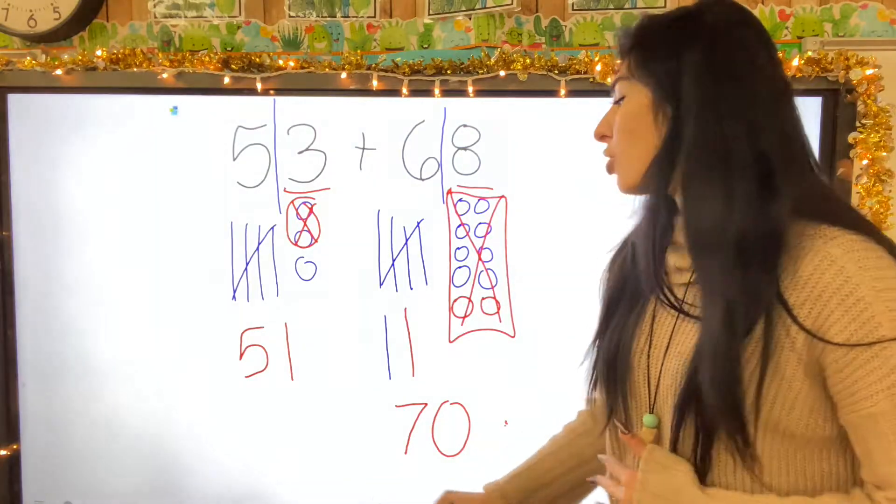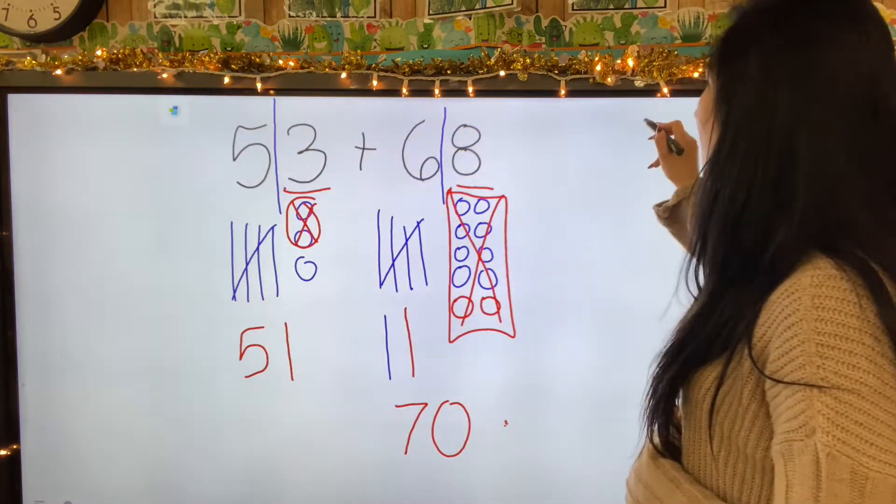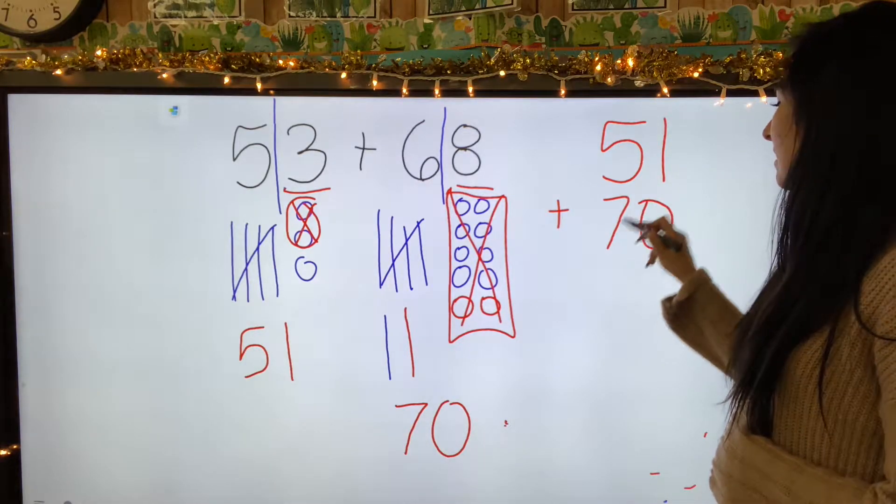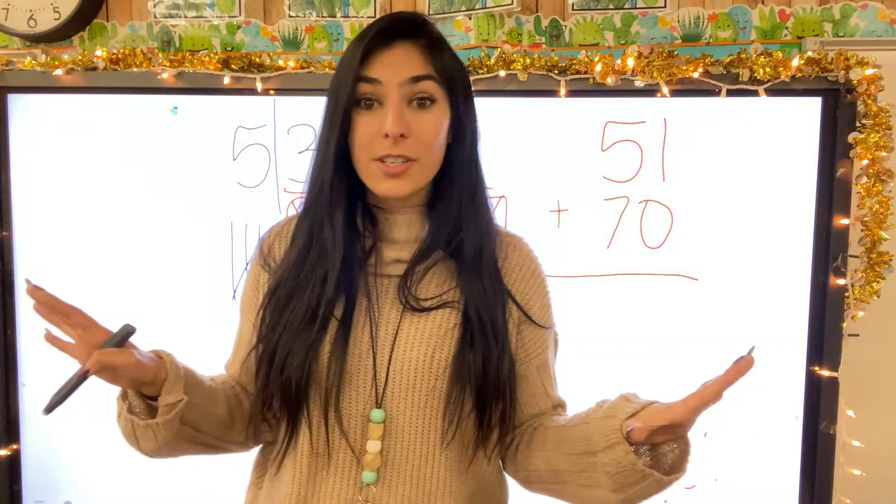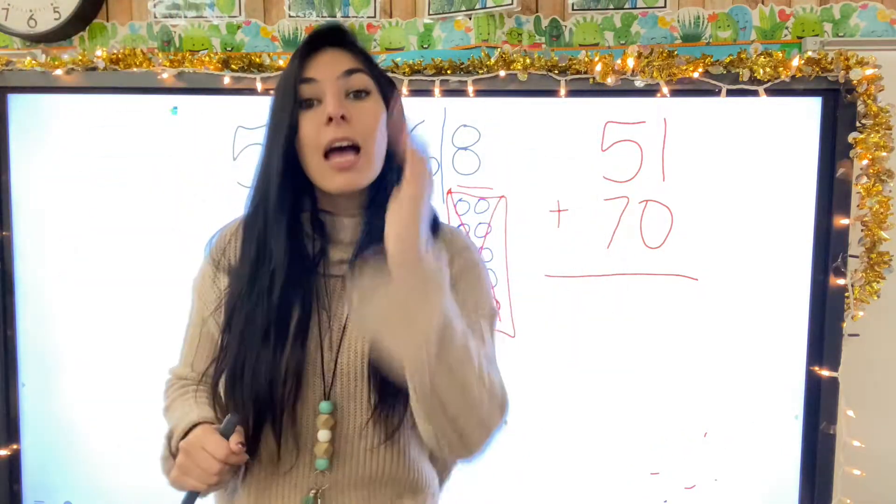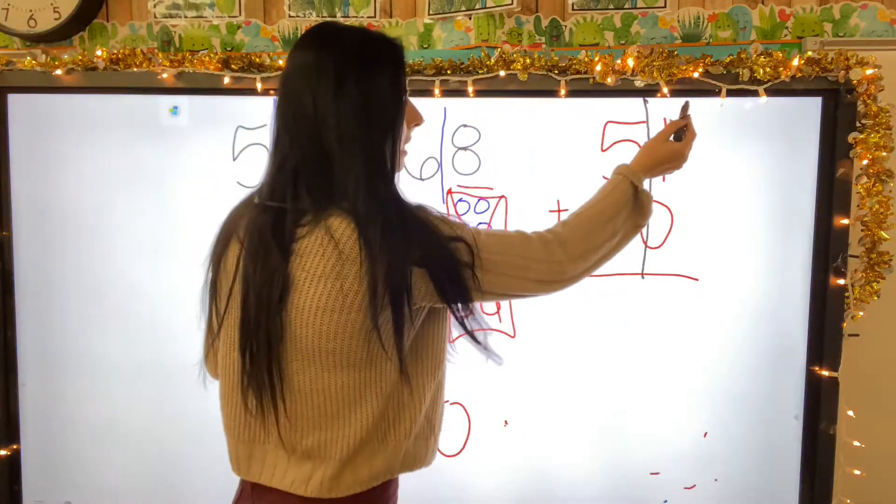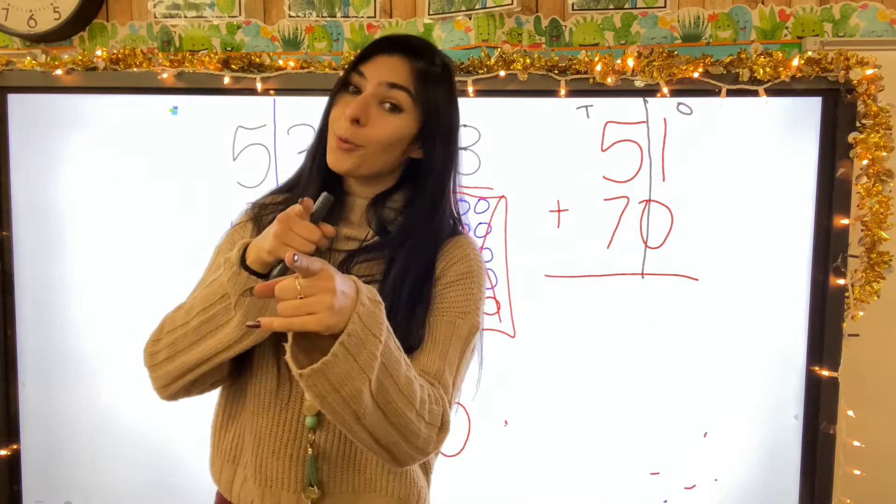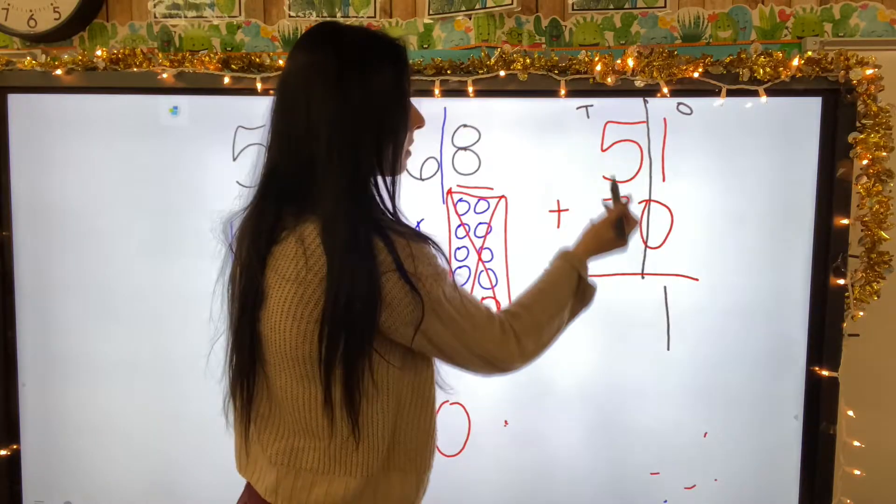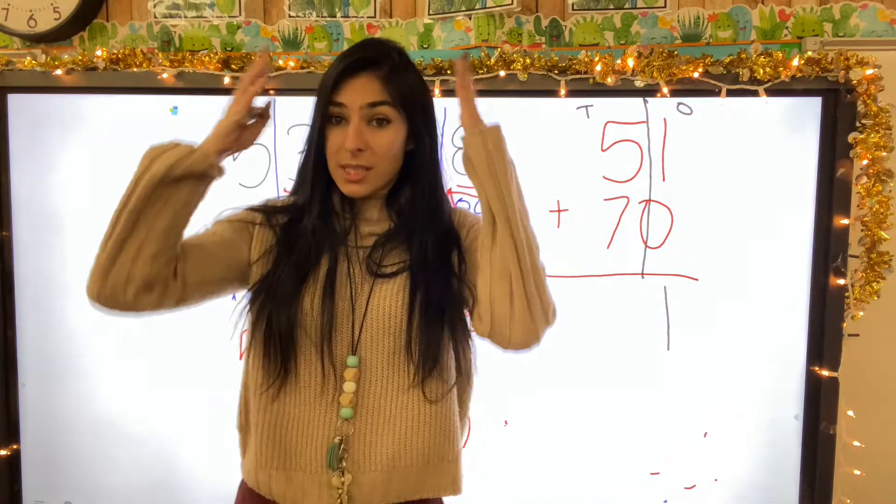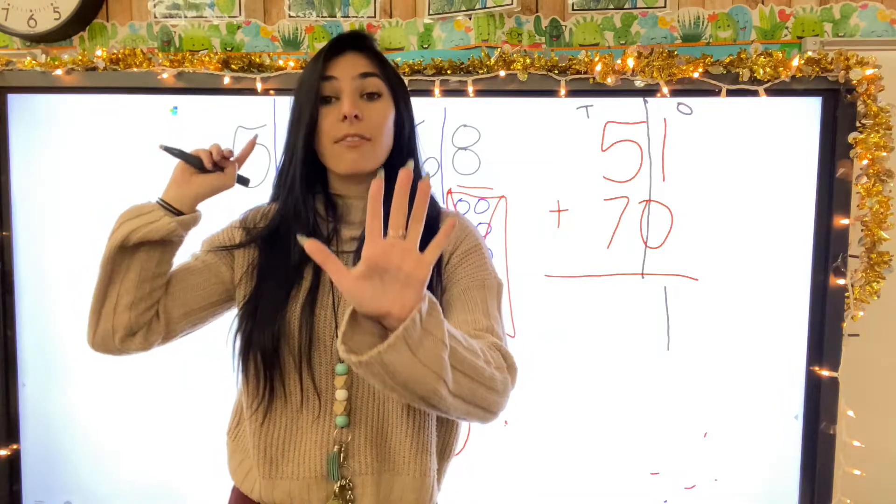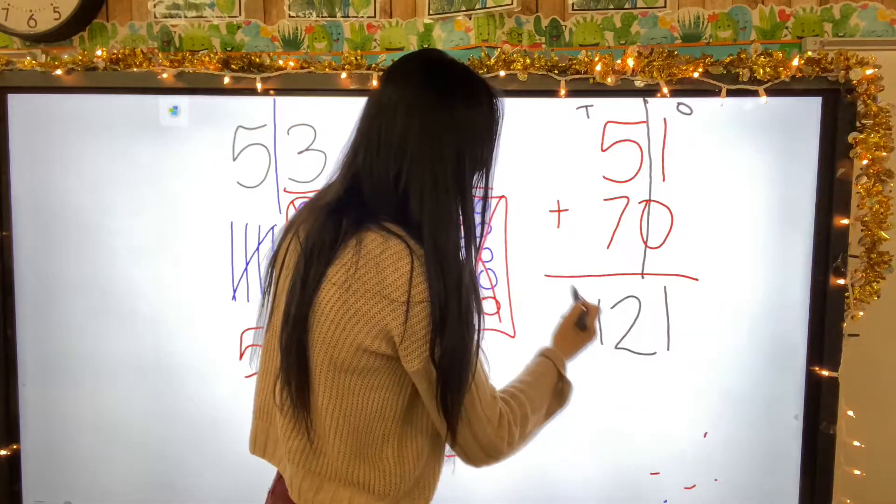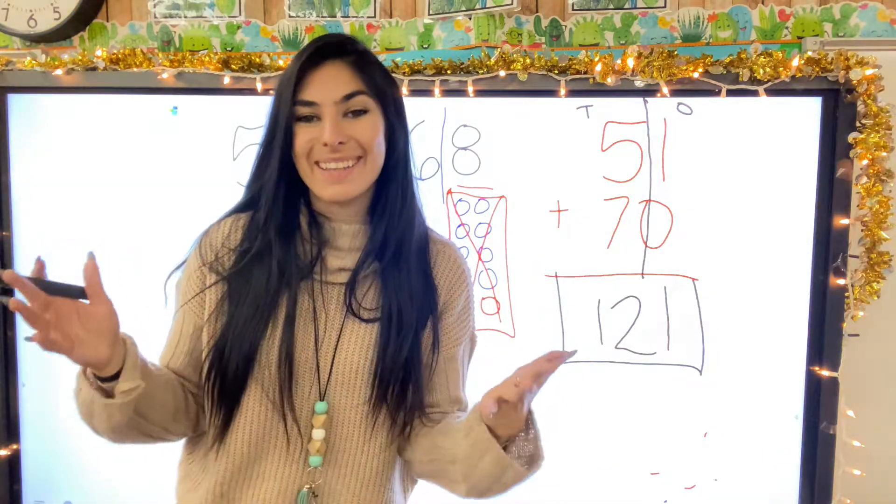So my new equation is 51 plus 70. I'm going to make it vertical over here. So what is the first thing I need to do whenever I'm adding vertical? Chop it down the middle. Making these my ones, these are my tens. We always start with the ones. So one plus zero: one. Five plus seven: I'm going to put seven in my head, five on my fingers. Seven, eight, nine, ten, eleven, twelve. So one hundred and twenty-one is our answer.